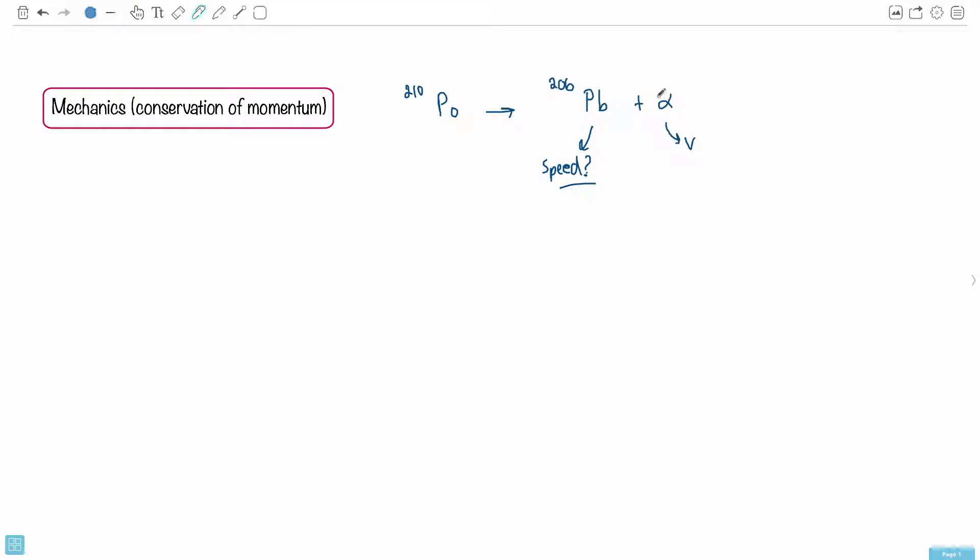The question tells you that the alpha particle has a speed v, and we're asked to find the speed of the lead.